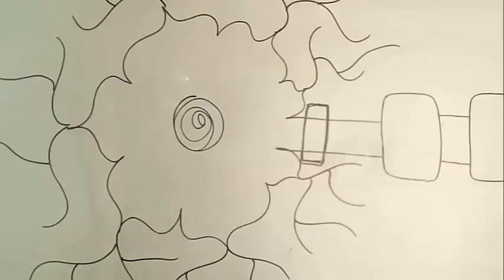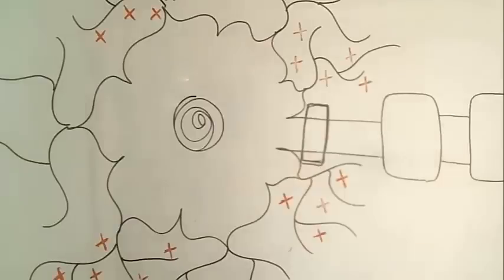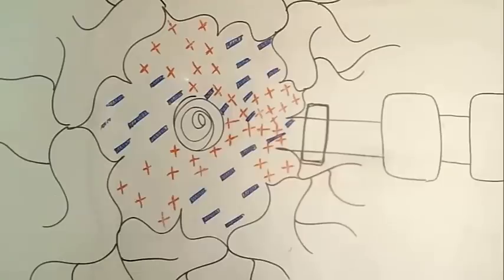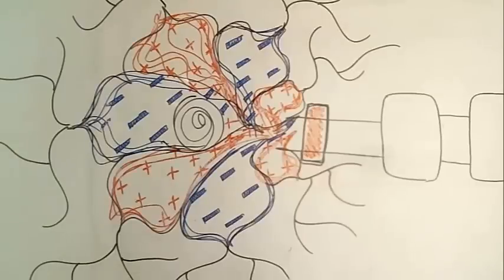The axon hillock is the point where the summation of excitatory postsynaptic potentials and inhibitory postsynaptic potentials meet. If the summation of these potentials reaches the threshold, the signal passes.